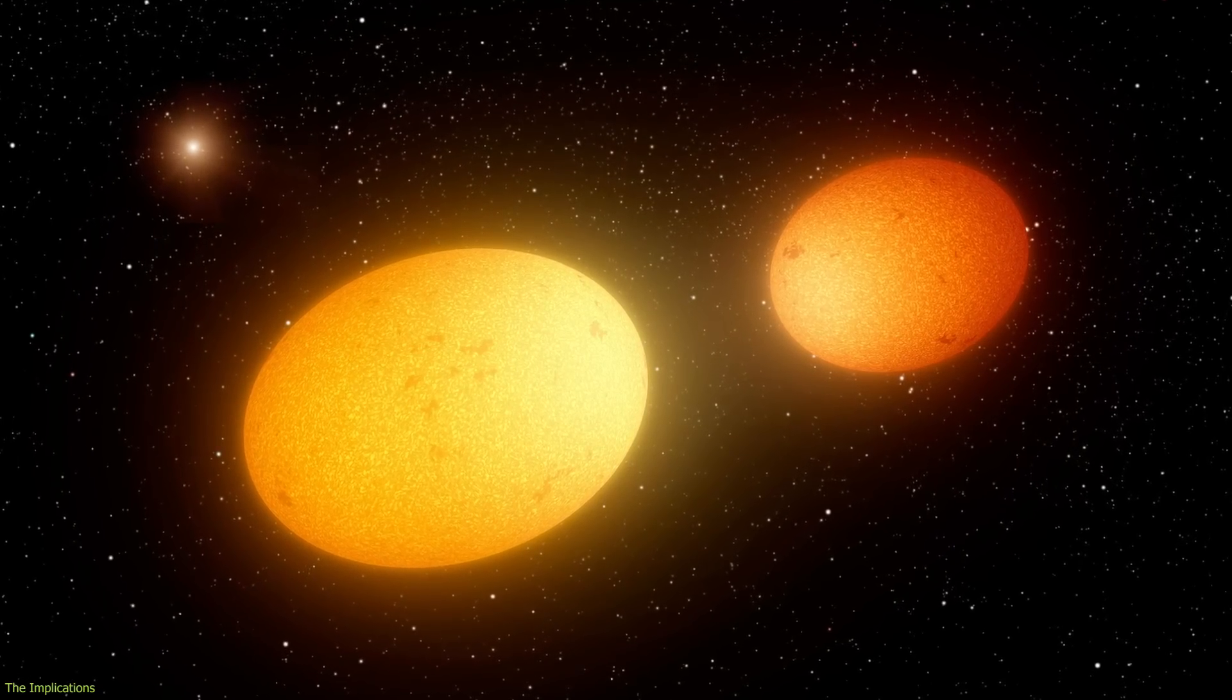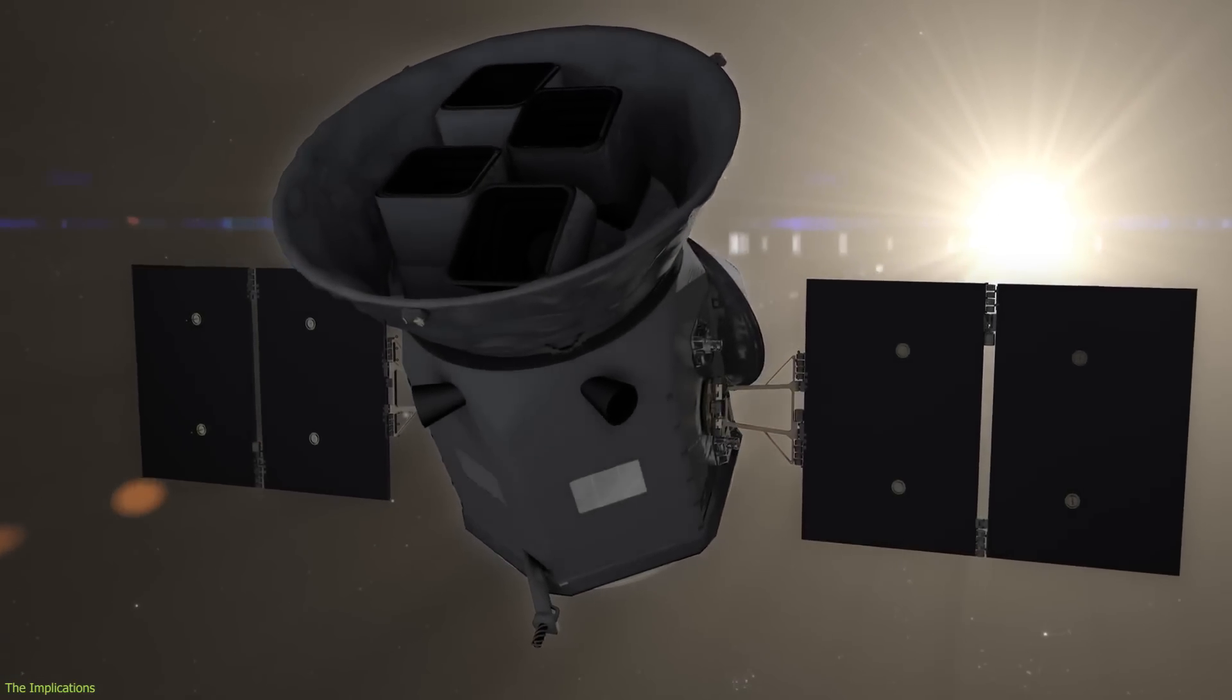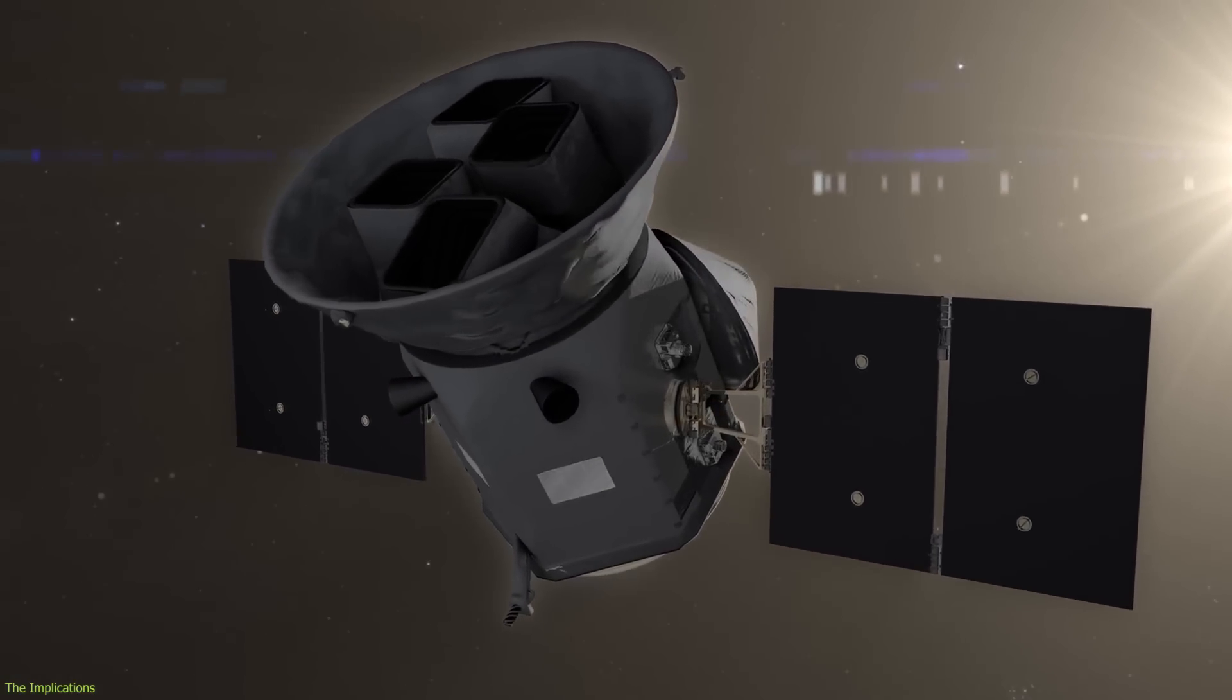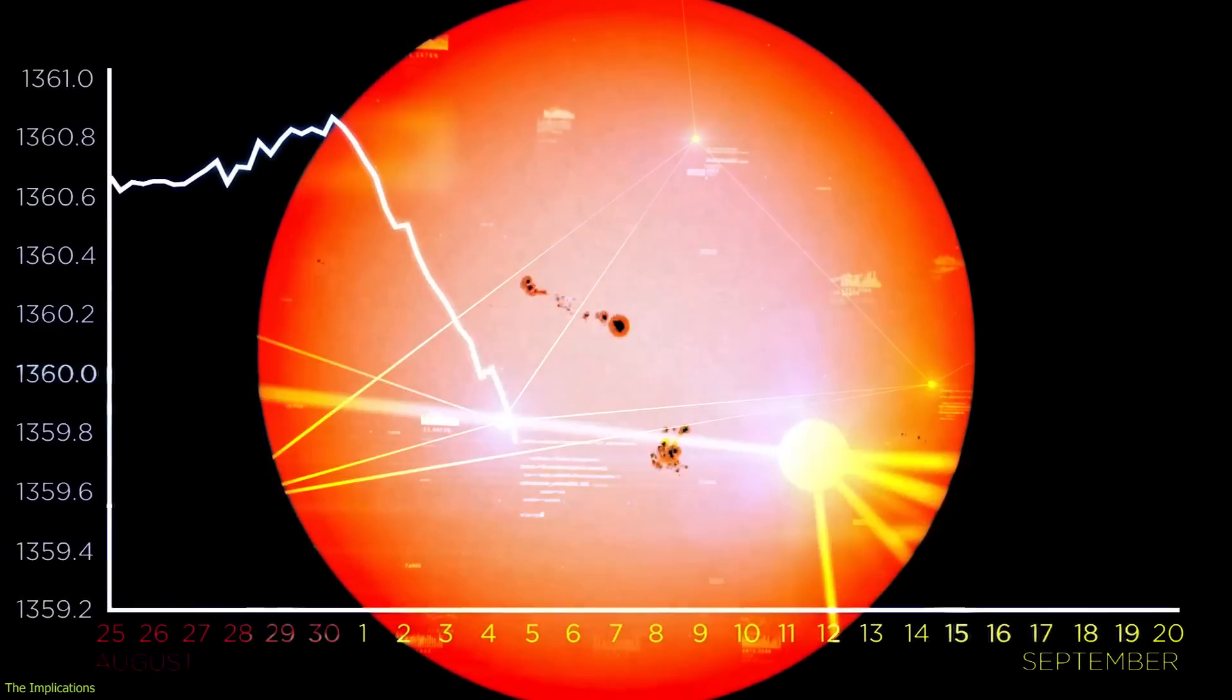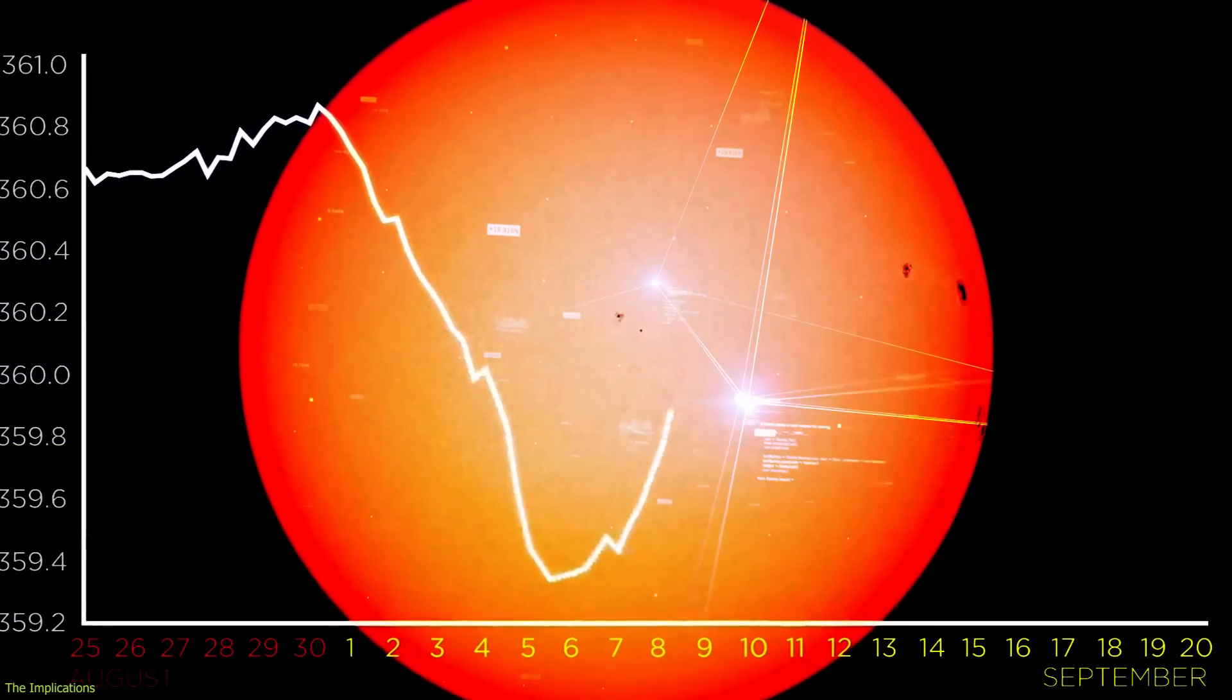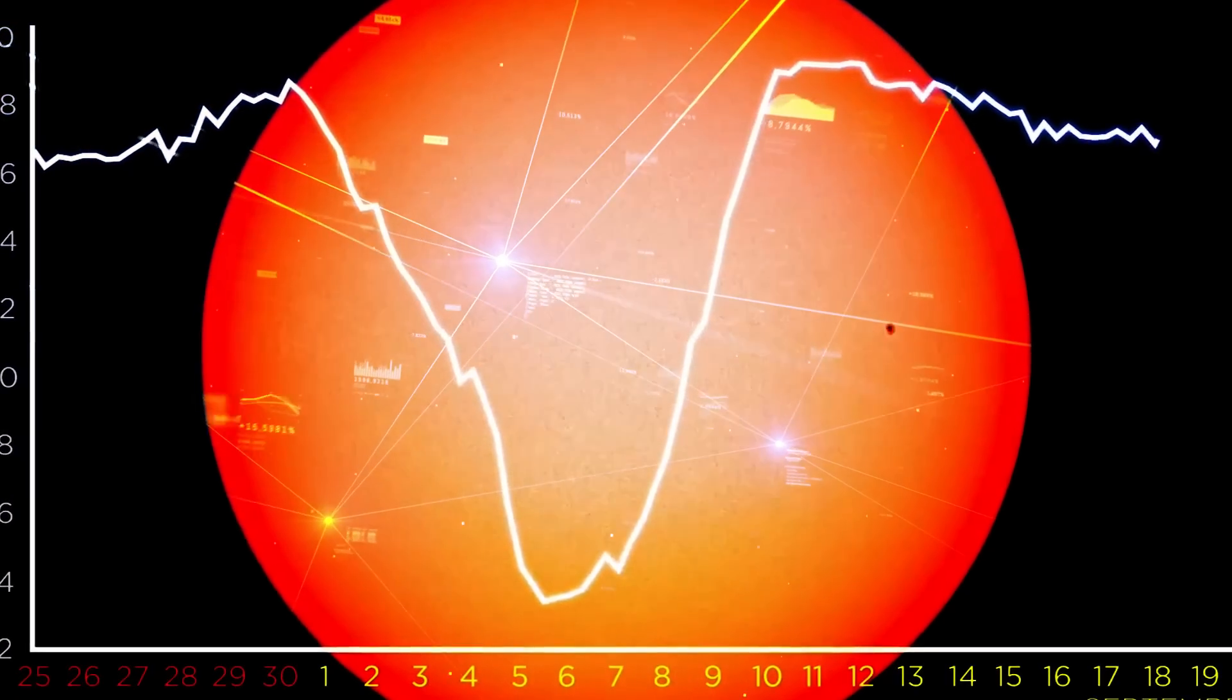Asteroseismology can be applied to heartbeat stars using data from TESS or other space telescopes that monitor their brightness variations over time. By analyzing these variations with sophisticated models and algorithms, we can extract the sound wave signals from the noise and interpret what they mean for the star's properties and behavior.